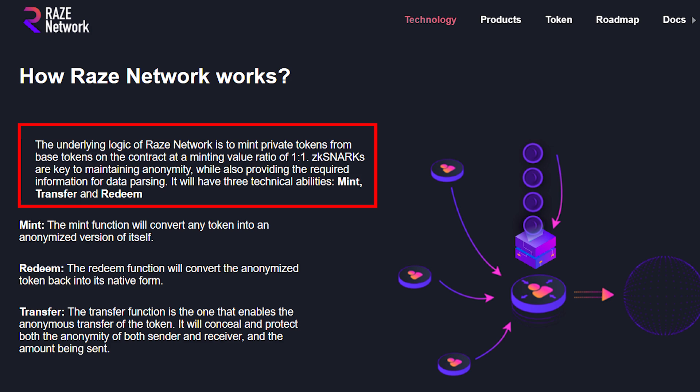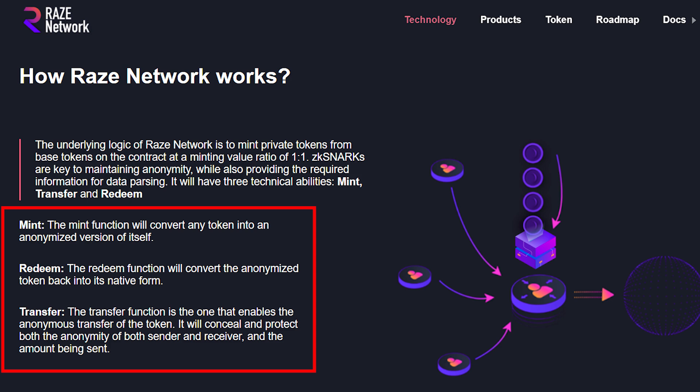It will have three technical abilities. First, Mint, which will convert any token into an anonymized version of itself. Second, Redeem, which will convert the anonymized token back to its native form. And third, Transfer, which is the function that enables the anonymous transfer of the token — it will conceal and protect the anonymity of both senders and receivers and the amount being sent.